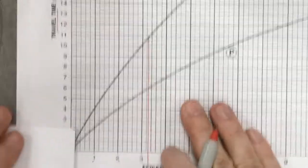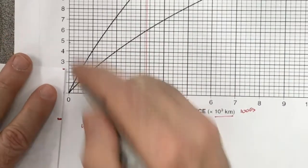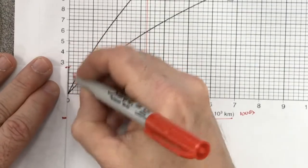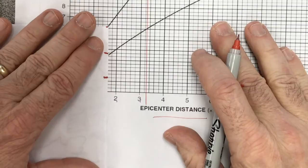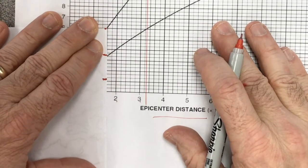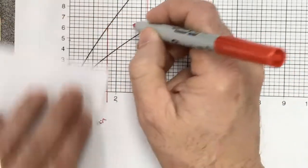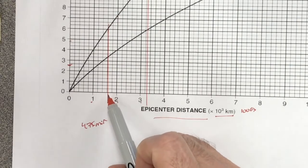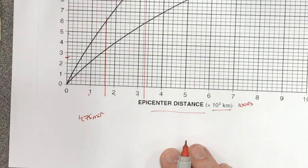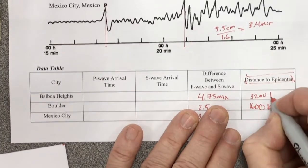Next one is 2.5 minutes. I'm going to repeat this same process. So for 2.5 minutes, line up my paper again. So 2.5 is here. Line it up, boom. Now I'm going to find the gap. And this comes out to, let's see, about 1,600. So 1,600, that's going to be Boulder, Colorado. So Boulder was 1,600 kilometers. These are all in kilometers.